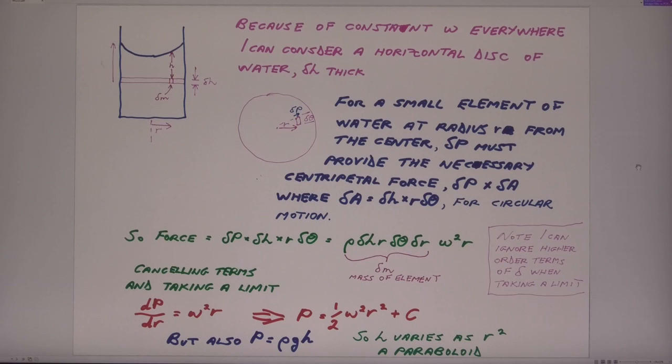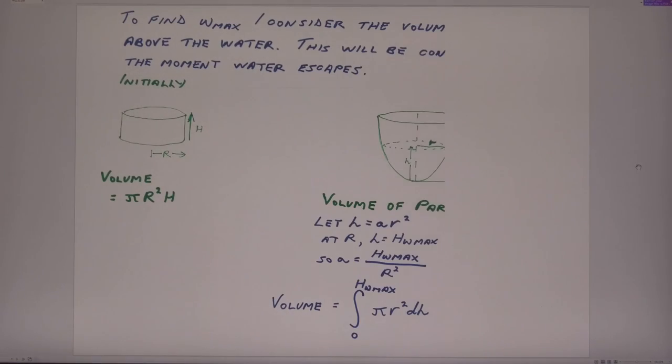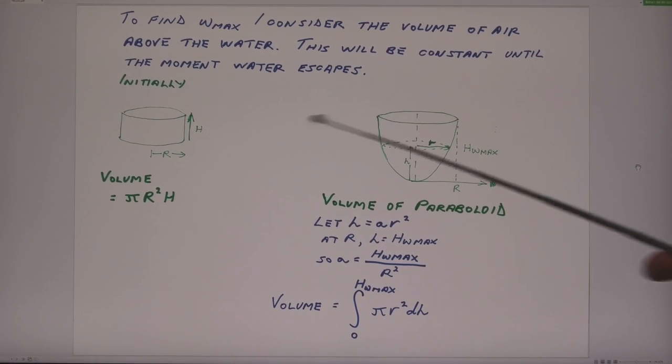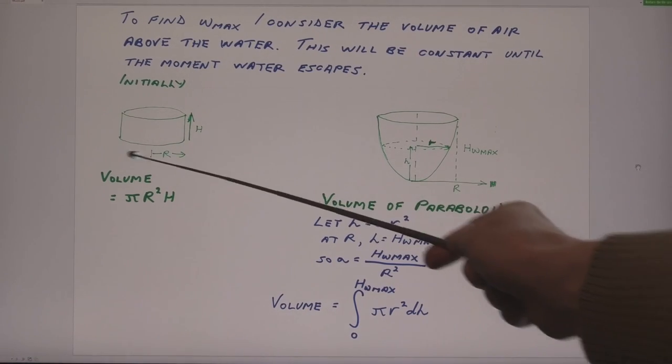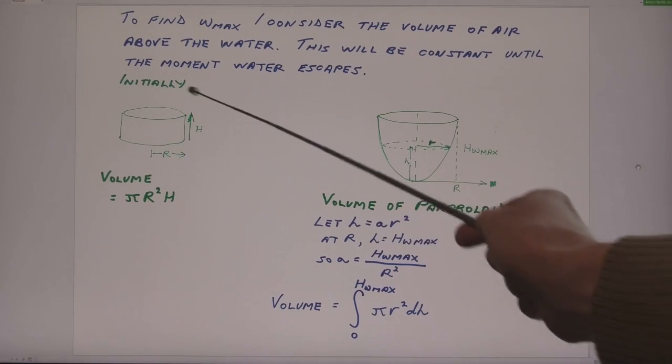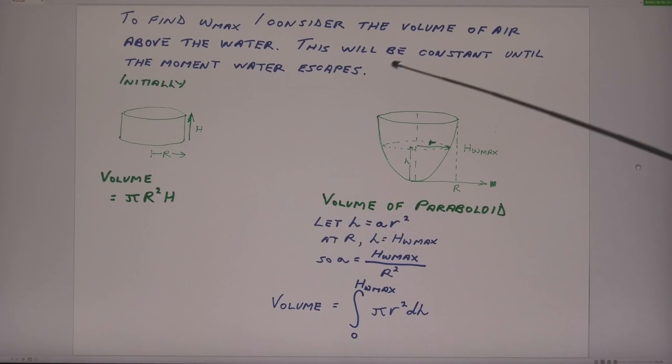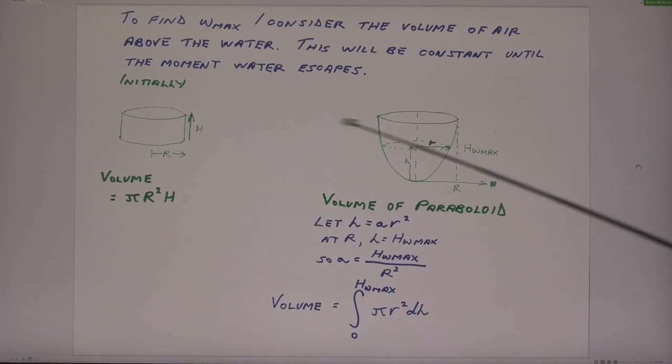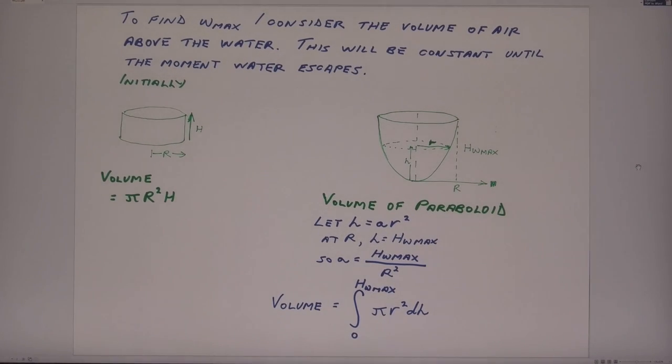Now to find the omega max. To find omega max, I consider the volume of air above the water, which will be constant, it will be constant until some water leaks out. So initially, I have got this shape here for the volume of air, and at some time when water starts to leak out, it will be a paraboloid. So what I need to do is equate that volume to that volume.